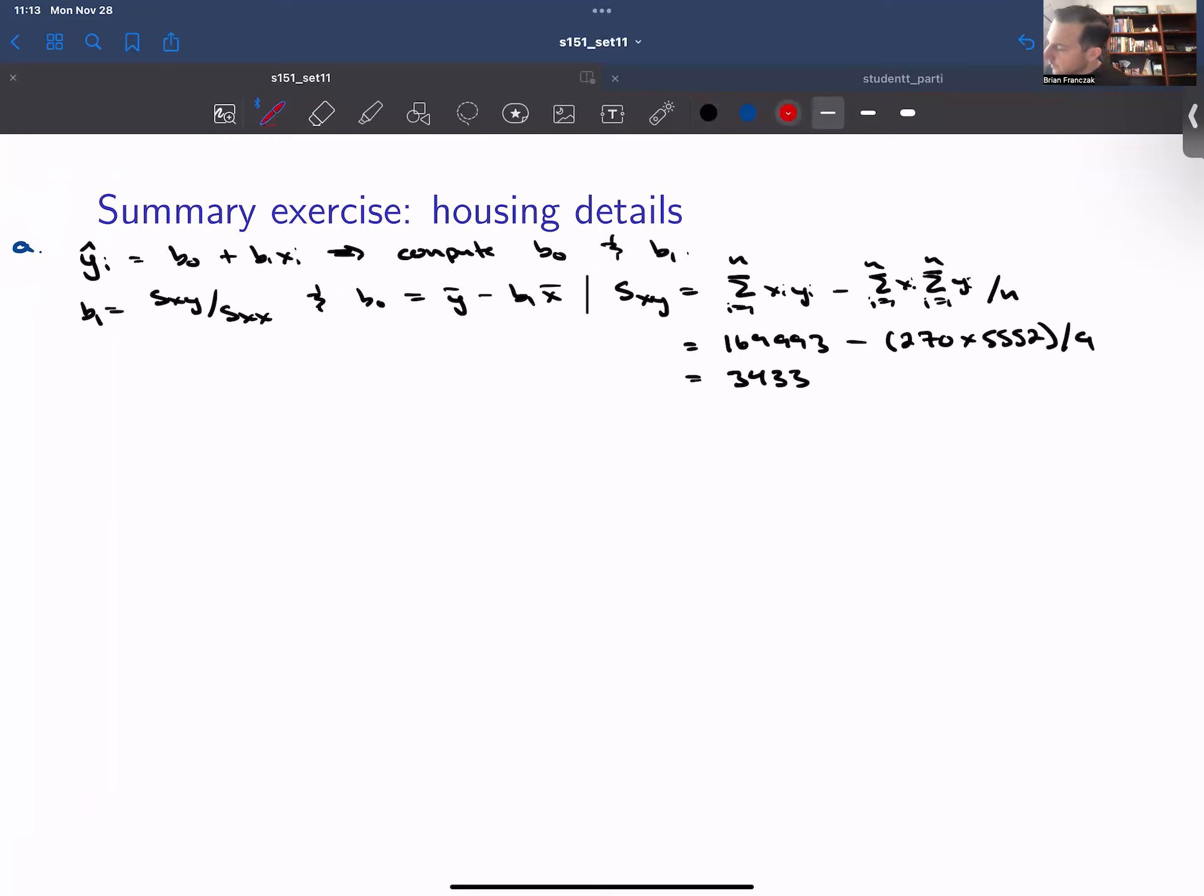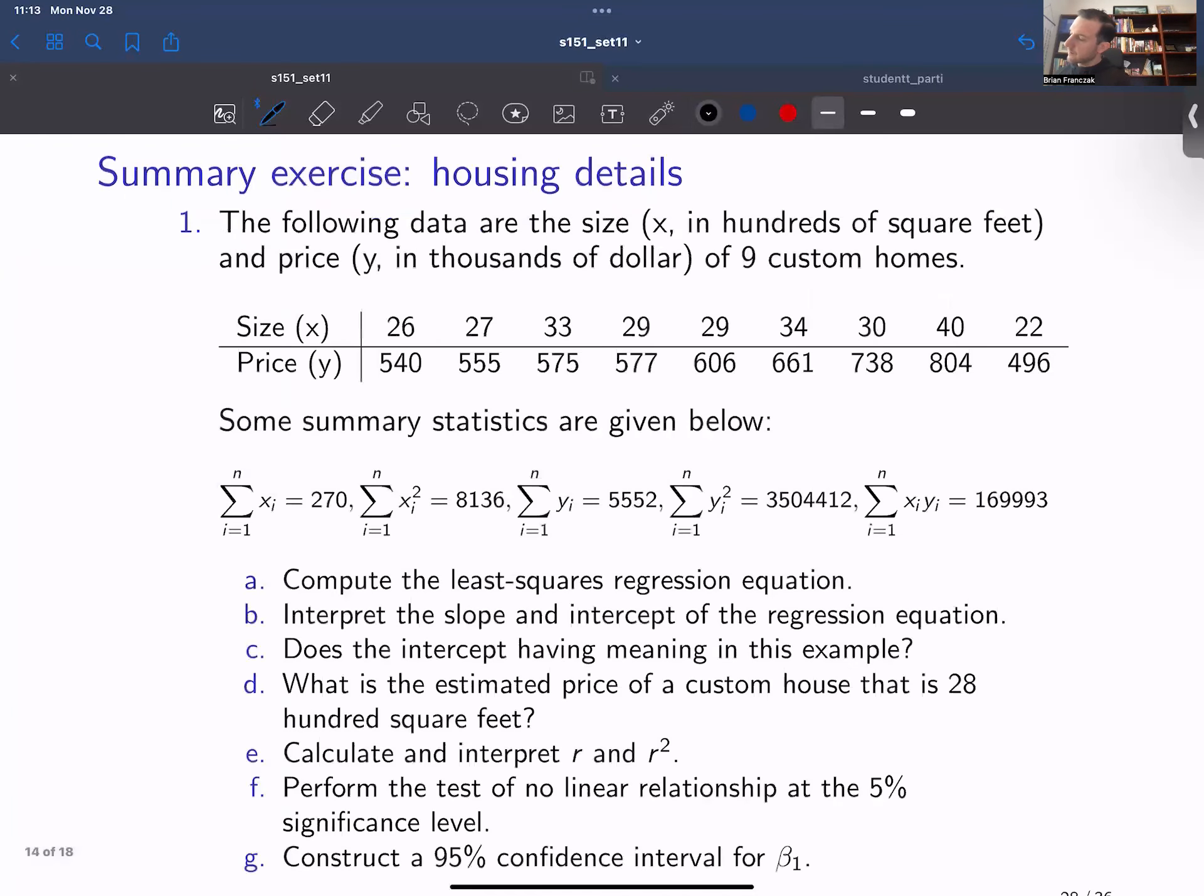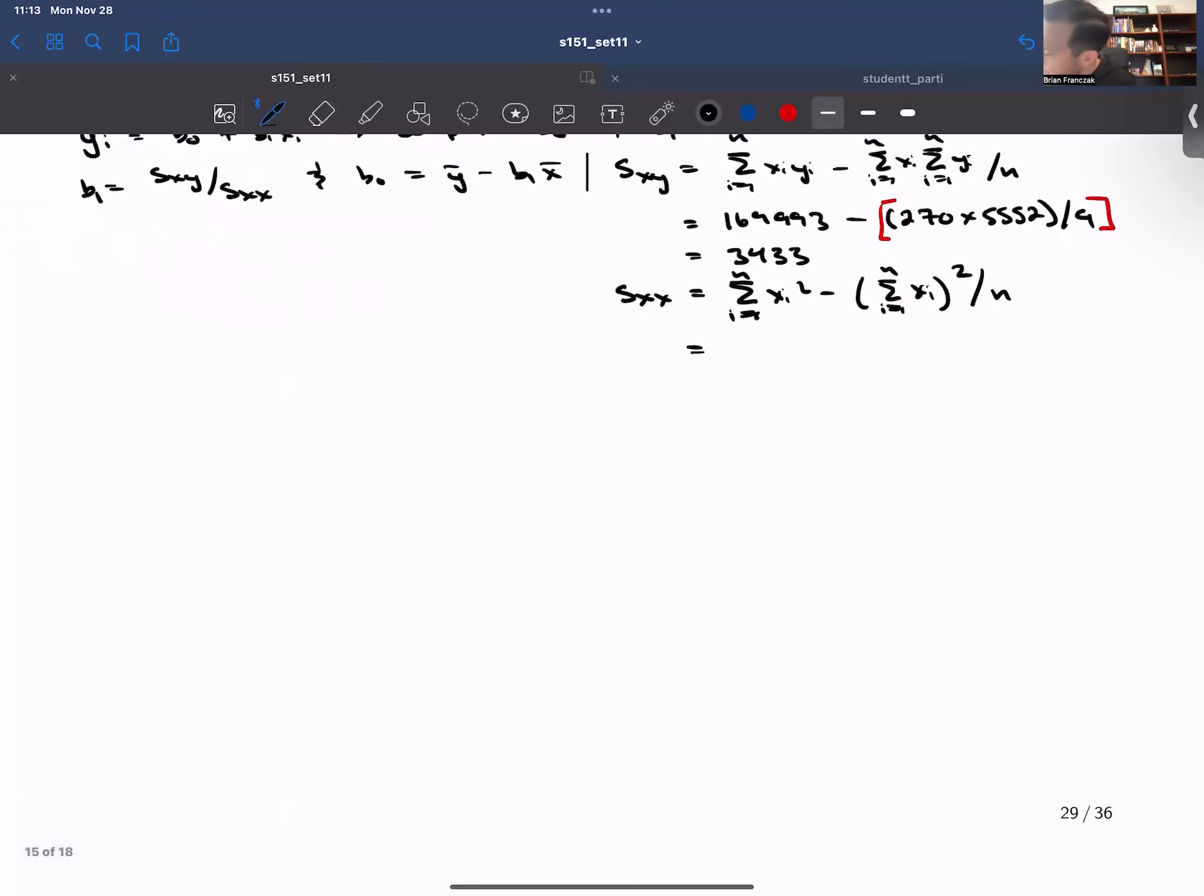Just keep in mind, when you're doing this calculation, you want to do this part first, and then subtract. We need sxx. So this is going to be the sum from i equals 1 to n of xi squared minus the sum i equals 1 to n of xi all squared divided by n. So from the previous slide, the sum of xi squared is 8136 minus 270 all squared over 9. And this should give us 216.